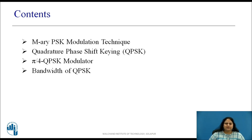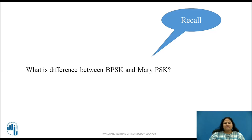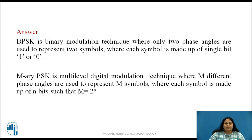These are the contents we will be covering in this session. In the last session we discussed M-ary signaling scheme. Before we discuss QPSK, pause this video and recall what is the difference between BPSK and M-ary PSK. BPSK is a binary modulation technique where only two phase angles are used to represent two symbols, where each symbol is made up of a single bit, 1 or 0. Whereas M-ary PSK is a multilevel digital modulation technique where M different phase angles are used to represent M symbols, where each symbol is made up of n bits such that M equals 2 raised to n.